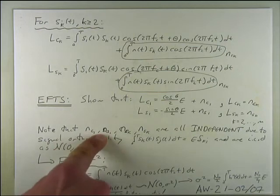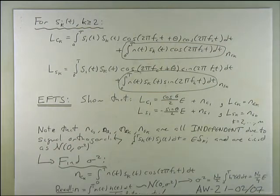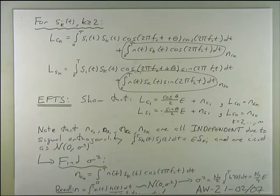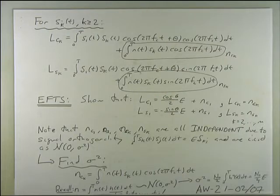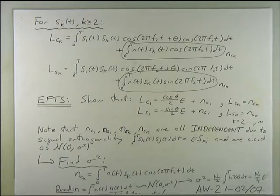It turns out all these noise variables are actually independent of each other because they're orthogonal. Every one of those variables is the correlation of the noise with an s. If we correlate two of them, what comes out is essentially the correlation of si with sj, and if i is not equal to j it equals zero. So these noise variables will also be uncorrelated with each other because of orthogonality.